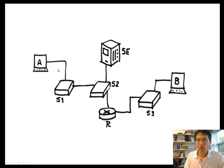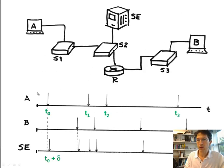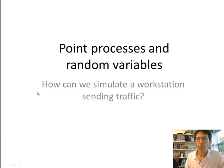And for that we are going to introduce a mathematical concept that is called a point process. But also we need to introduce a random variable as well. And the question is how can we simulate a workstation that sends traffic?